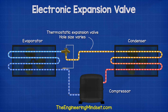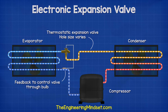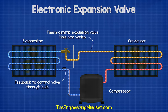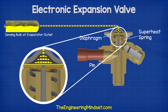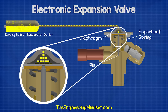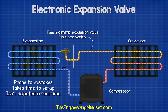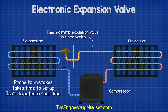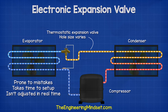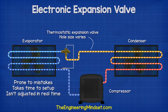The next evolution was the thermostatic expansion valve. This is still widely used today and it senses the superheat at the outlet through a bulb which is filled with another refrigerant. This other refrigerant will expand to close the valve when the superheat is too high, and it condenses to open the valve when the superheat is too low. This type of valve needs to be manually calculated and adjusted by a technician. It does work very well but it's prone to mistakes, it takes a long time to calculate and set up, and it is only adjusted once per service visit which is not ideal. It will also not allow peak performance. However it does work very well and these will continue to be used for many years.